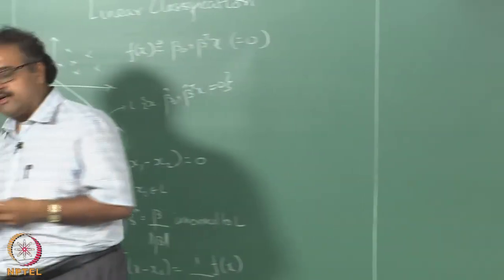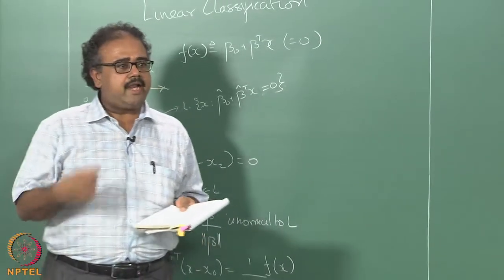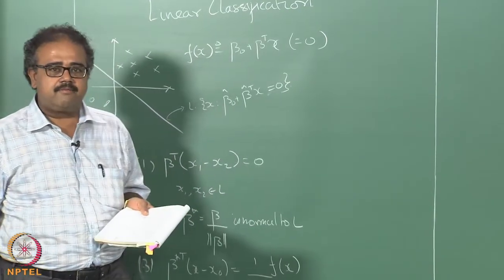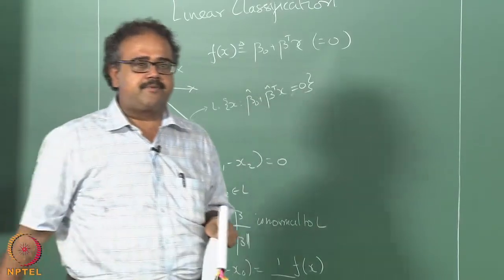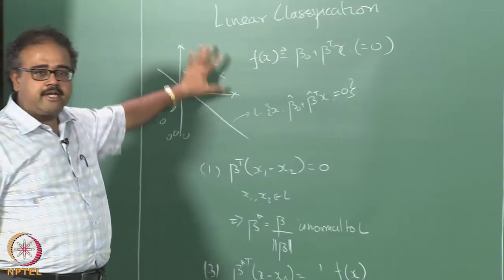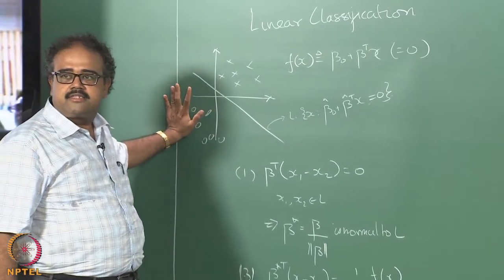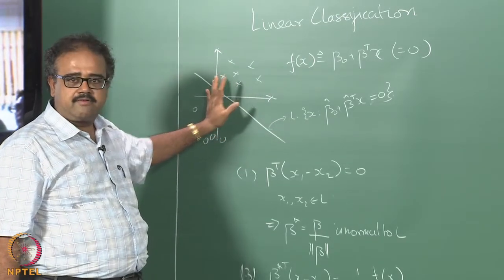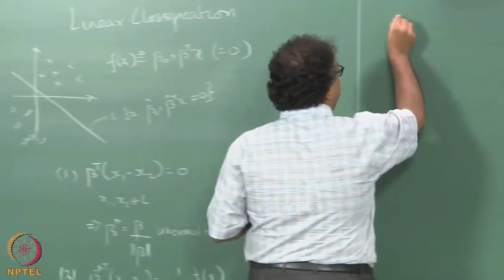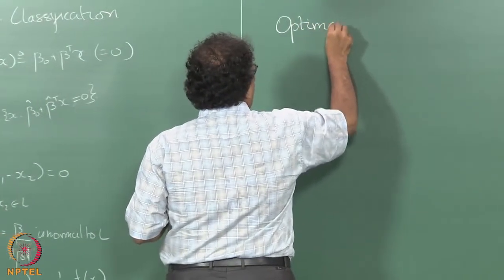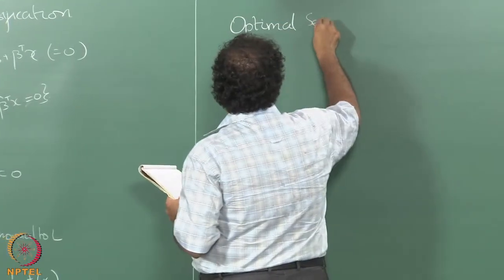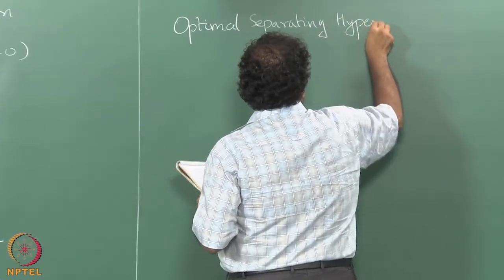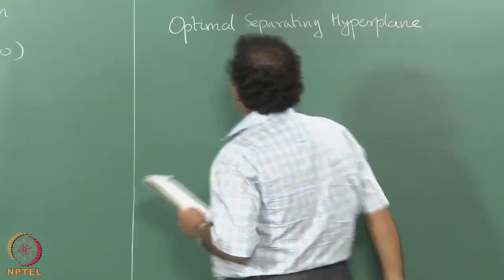Now what we are going to try and do is characterize a specific optimal solution. We will first start by considering the case of linearly separable data, just like what I have drawn here — data points that are perfectly separable by a hyperplane. We will try to characterize what I mean by an optimal separating hyperplane.